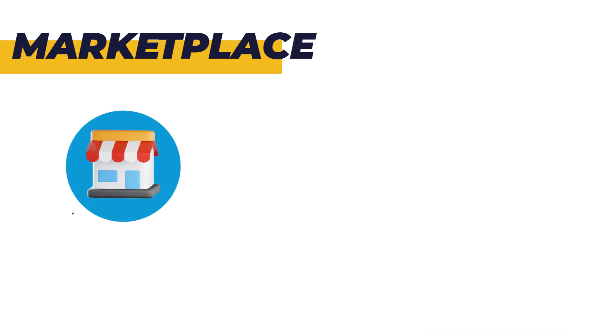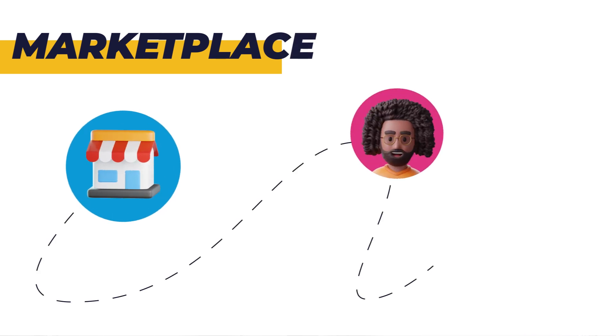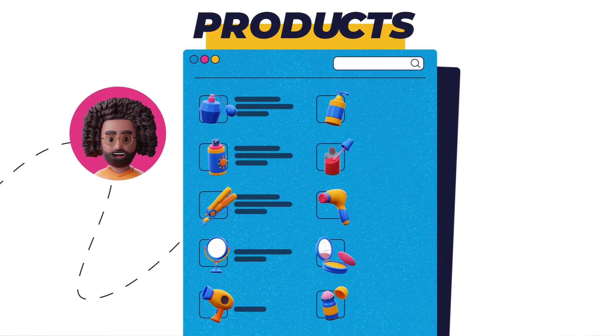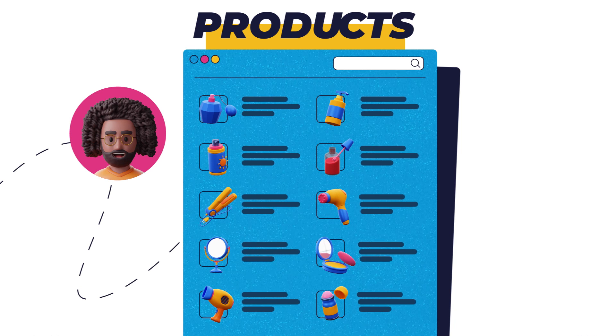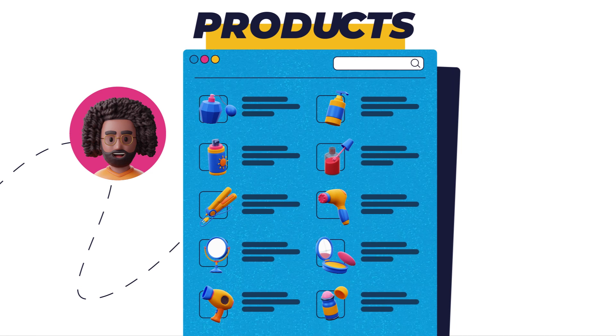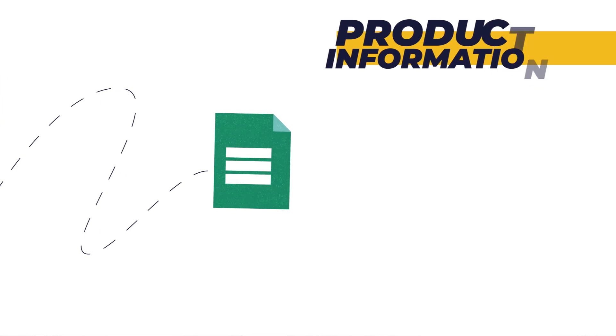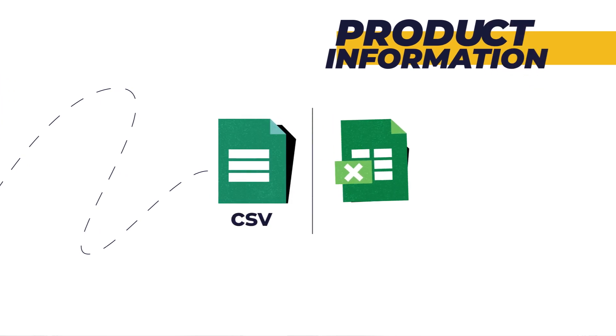For simplicity's sake, let's say the marketplace you want to publish your products on requires you to submit their product information in the form of a CSV feed. A CSV feed is more or less comparable to an Excel file, only that instead of it being available just on your own PC, it is hosted on a server and anyone with a link can download it.